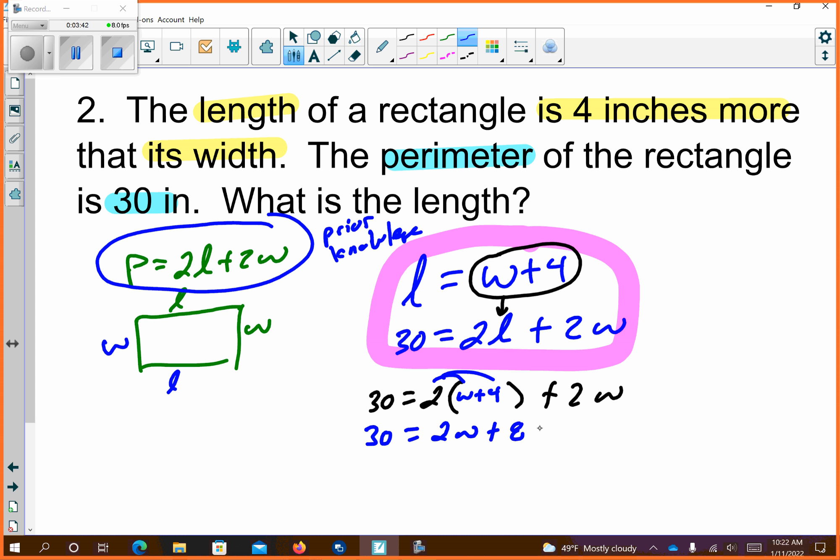So I get 30 equals 2(W+4) plus 2W. Distribute over: 2W plus 8 plus 2W. Those are like terms and start solving it. Subtract 8, subtract 8. What is that? 22. So 4W equals 22. Divide each side by 4. So I find that W equals 22 over 4. I can reduce that to 11 over 2. That would be 5.5 inches.